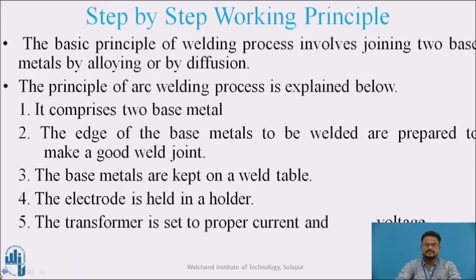Now we will see the step-by-step procedure for the working principle. The basic principle of welding involves joining two base metals by allowing fusion or diffusion in solid state. In fusion welding, when the two base metals are heated to their fusion temperature, both join at the fused area and form a strong bond after solidification. This fusion and solidification can occur with the base metals alone or with the addition of filler metal. The principles of a typical arc welding process involve two base metals to be welded, with the edges of the base metals prepared to make a good weld joint.